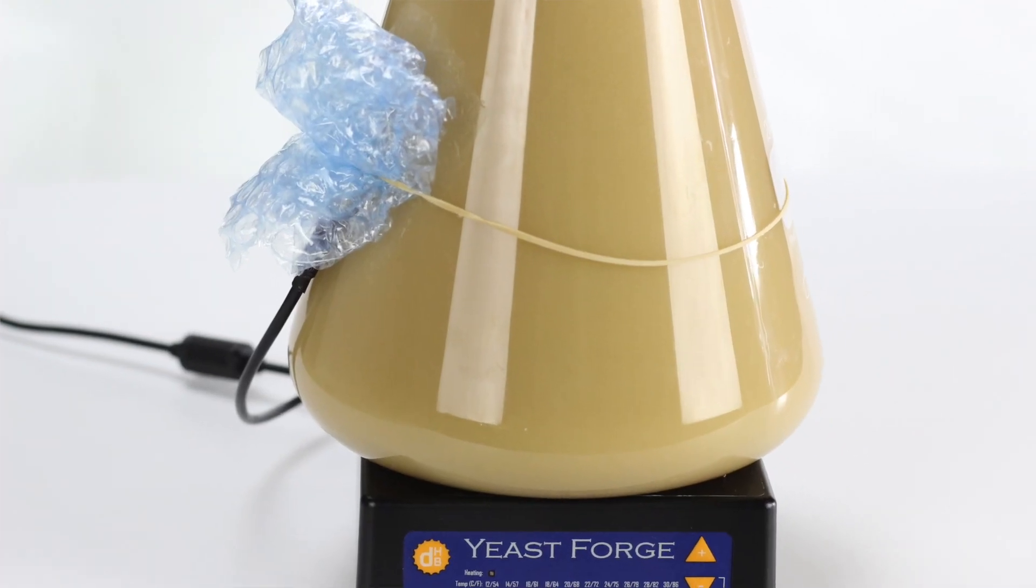And by putting the temperature probe underneath that bubble wrap, that's going to protect it from the ambient air temperature here. So if the air is really cold here, it's not going to affect our readings and mess up the readings for the starter temperature.